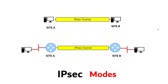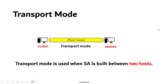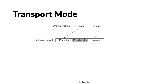IPsec operates in two modes: transport mode and tunnel mode. Transport mode is used when a security association is built between two hosts — for example, end-to-end communication between two devices such as client to server or server to server.